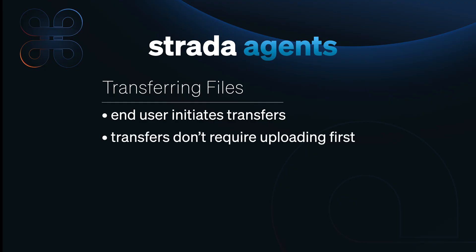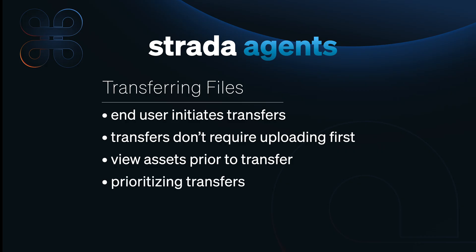Strata transfers are peer-to-peer, which means you never have to spend time or money uploading files to a cloud transfer service before anyone can download them. Third, you can view assets before deciding what to download, so you never accidentally download files you might not need. And lastly, you can prioritize which files you want first. For example, if I'm in a time crunch, I can prioritize the most important files before downloading a larger batch.